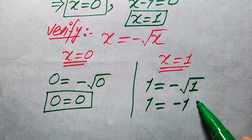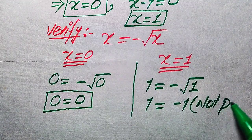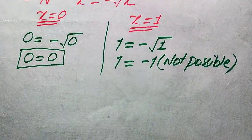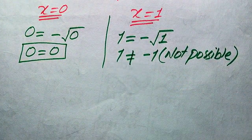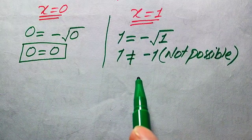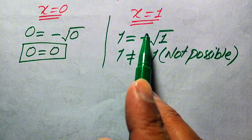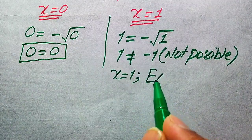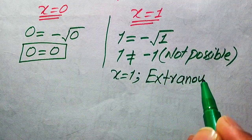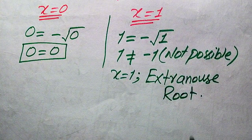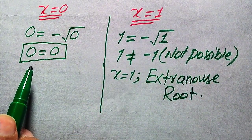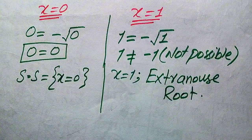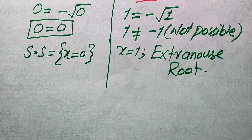This is not a possible case — positive 1 cannot equal negative 1. So X equals 1 does not satisfy our given equation, and we conclude that X equals 1 is the extraneous root. X equals zero satisfies our given equation, so X equals zero is the only solution set of the given equation.